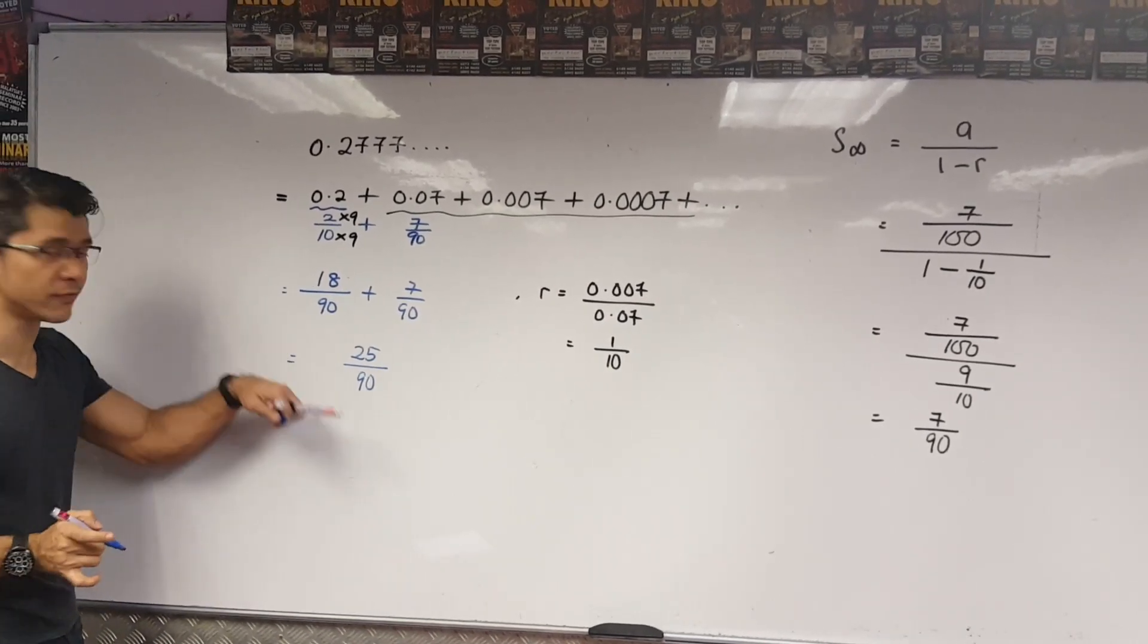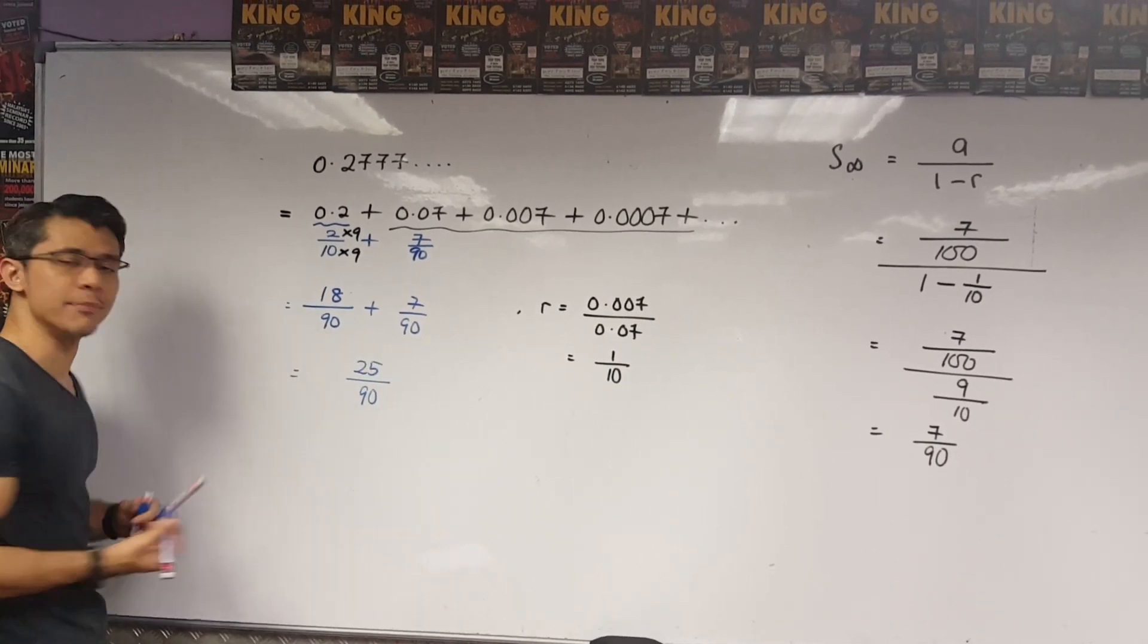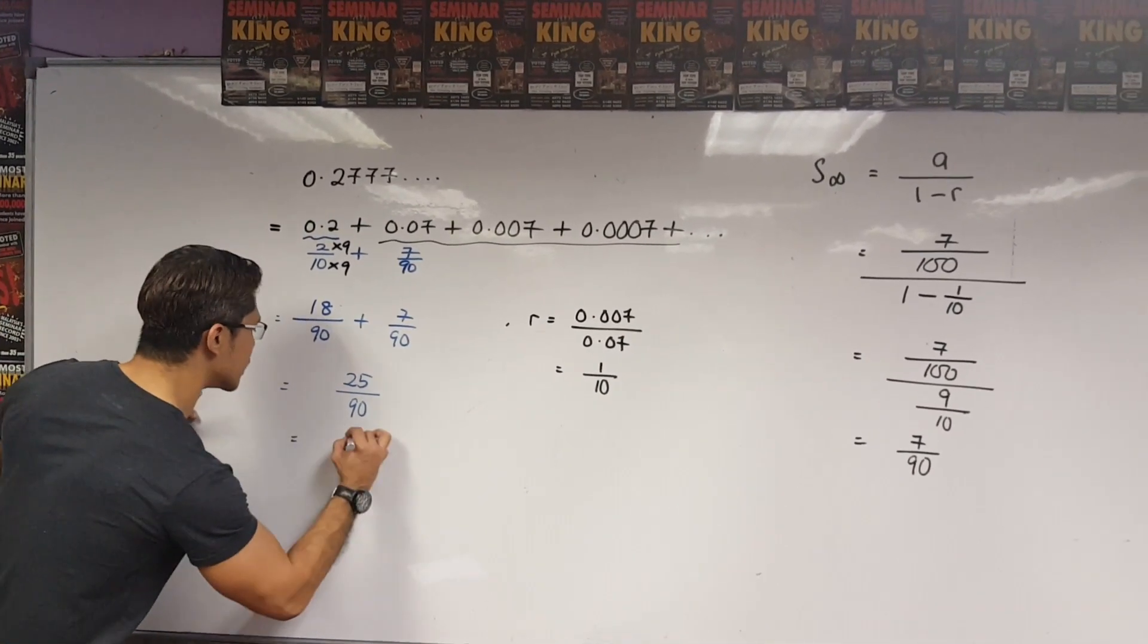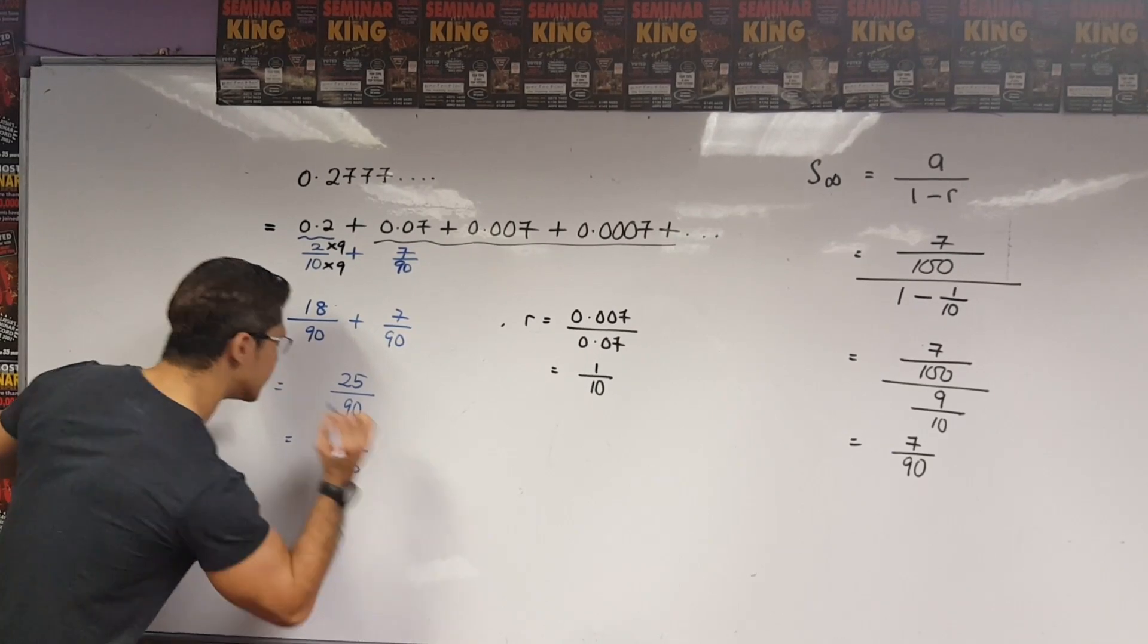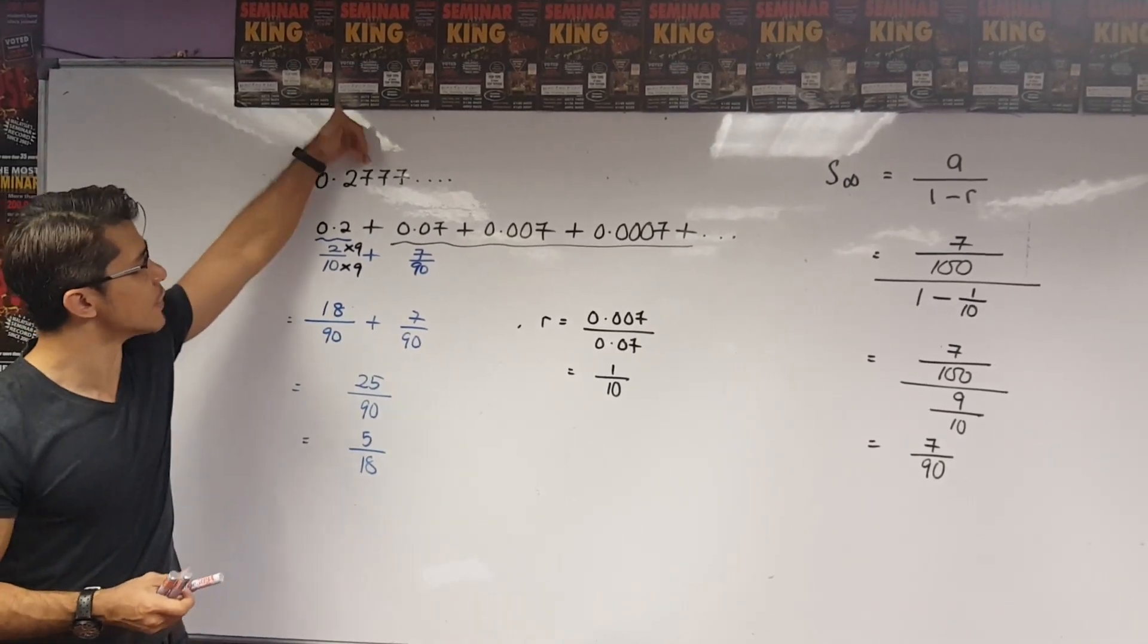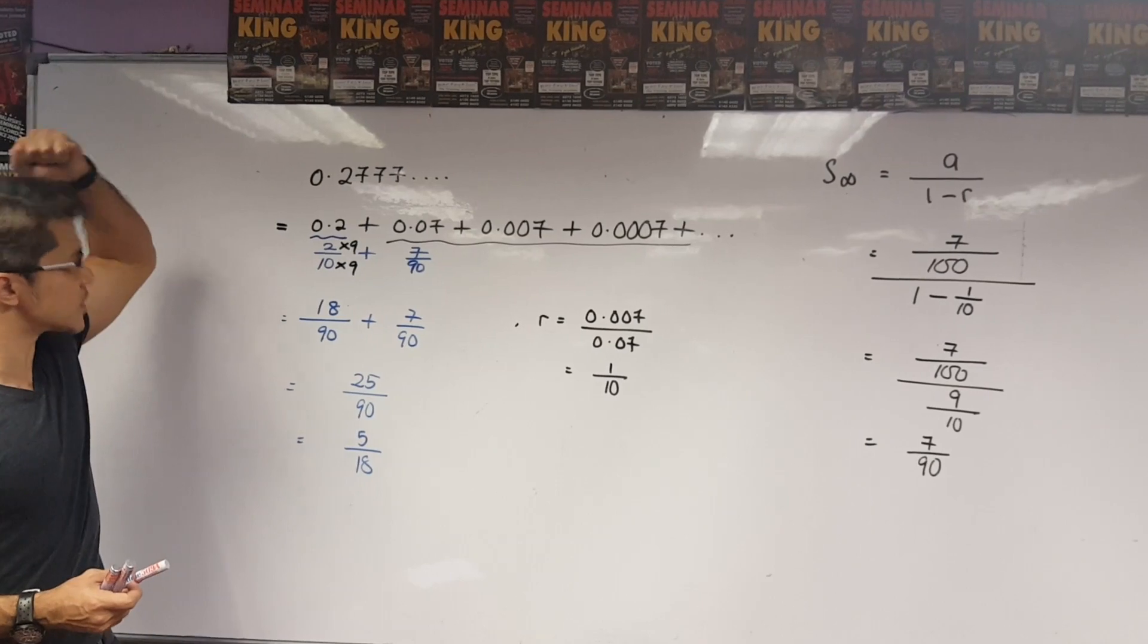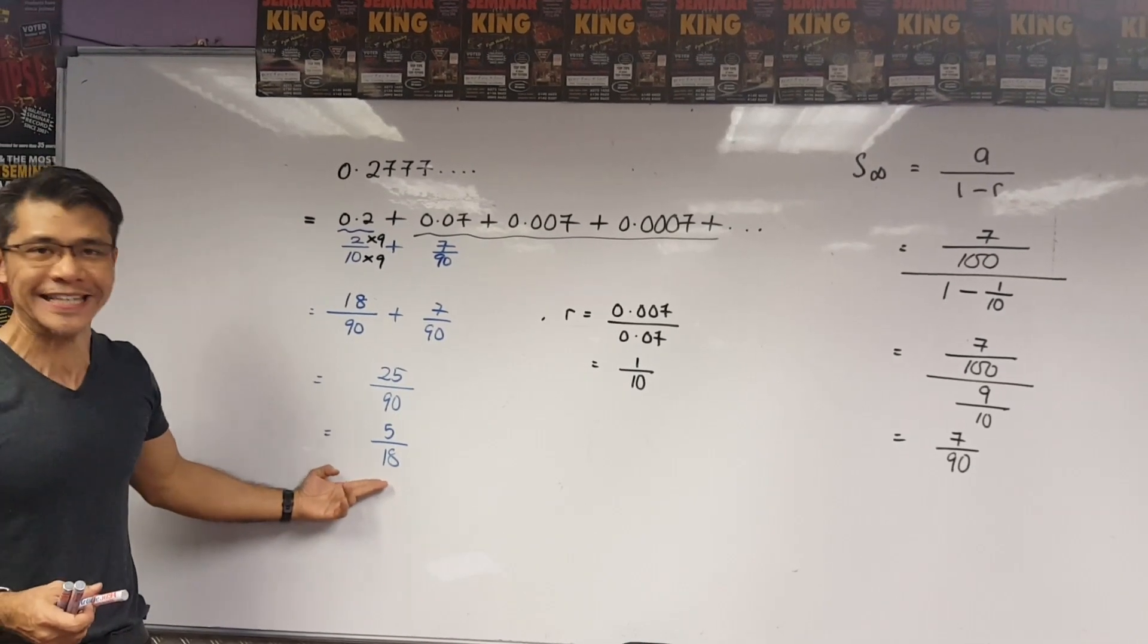This gives us 25 over 90. Don't forget, simplify the answer. Both numbers can be divided by 5. So, the final answer is 5 over 18. So, in other words, 0.27777 onwards is equal to 5 over 18.